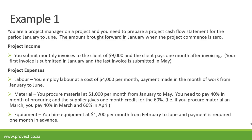For labor, you employ labor at a cost of $4,000 per month, and payment is made in the month of work from January to June. For material, you procure material at $1,000 per month from January to May, and you need to pay 40% in the month of procuring — the supplier gives one month credit for the remaining 60%. So if you procure material in March, you pay 40% in March and 60% in April. For equipment, you hire equipment at $1,200 per month from February to June, and payment is required one month in advance. Now let's do the example.